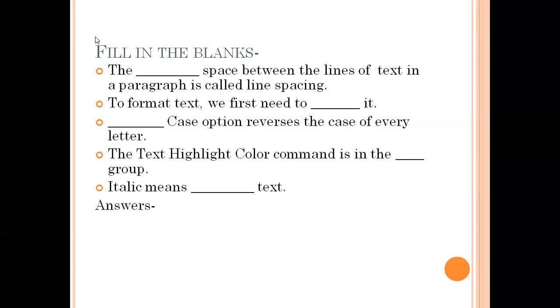The answers are: First is vertical - the vertical space between the lines of text in the paragraph is called line spacing. Second, select - to format text we need to select it first. Third, toggle case option reverses the case of every letter. Fourth, the text highlight color command is in the font group. Fifth, italic means slanted text.